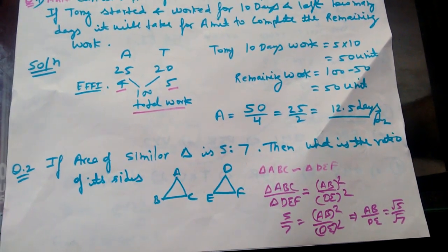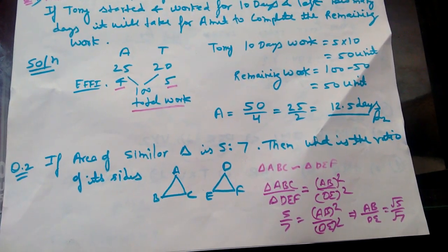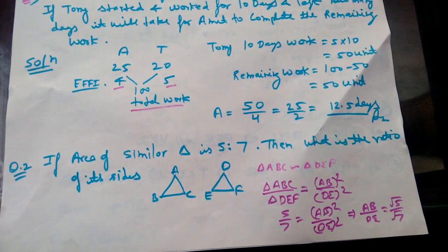It is area. It is side squared. So 5 by 7 is equal to, if you have a question,